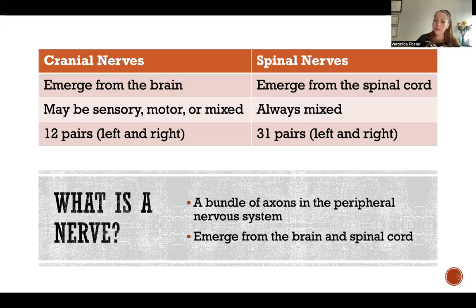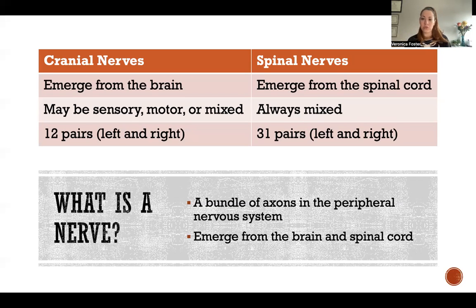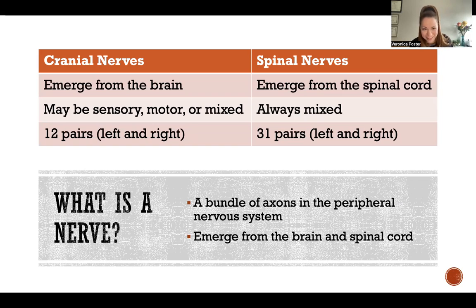Nerves can emerge from the brain or spinal cord, and that is the difference between a spinal nerve and a cranial nerve. Cranial nerves emerge from the brain, most of them from the brainstem, and spinal nerves emerge from the spinal cord. Both then go out into the periphery and branch off and form plexuses and do all sorts of things.